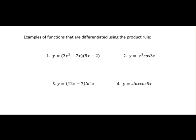Here are some examples of when you'd use the product rule. In the first one, the function is made up of the product of two functions. In other words, it's one function multiplied by another. So 3x squared minus 7x, that's one function, multiplied by 5x minus 2, another function. When you have two functions multiplied, you use the product rule to differentiate them.